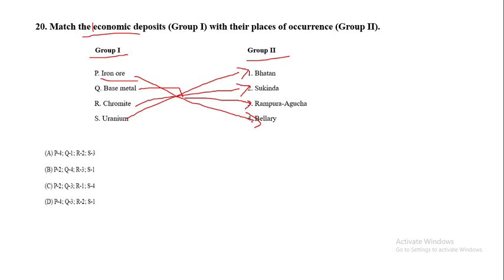The answer will be four, three, two, one — so D will be the answer. That is: iron ore→Bellari, base metals→Rampura Aukcha, chromate→Sukhinda, and uranium is option four. This is the answer for this match-the-following, and this question is from economic geology.